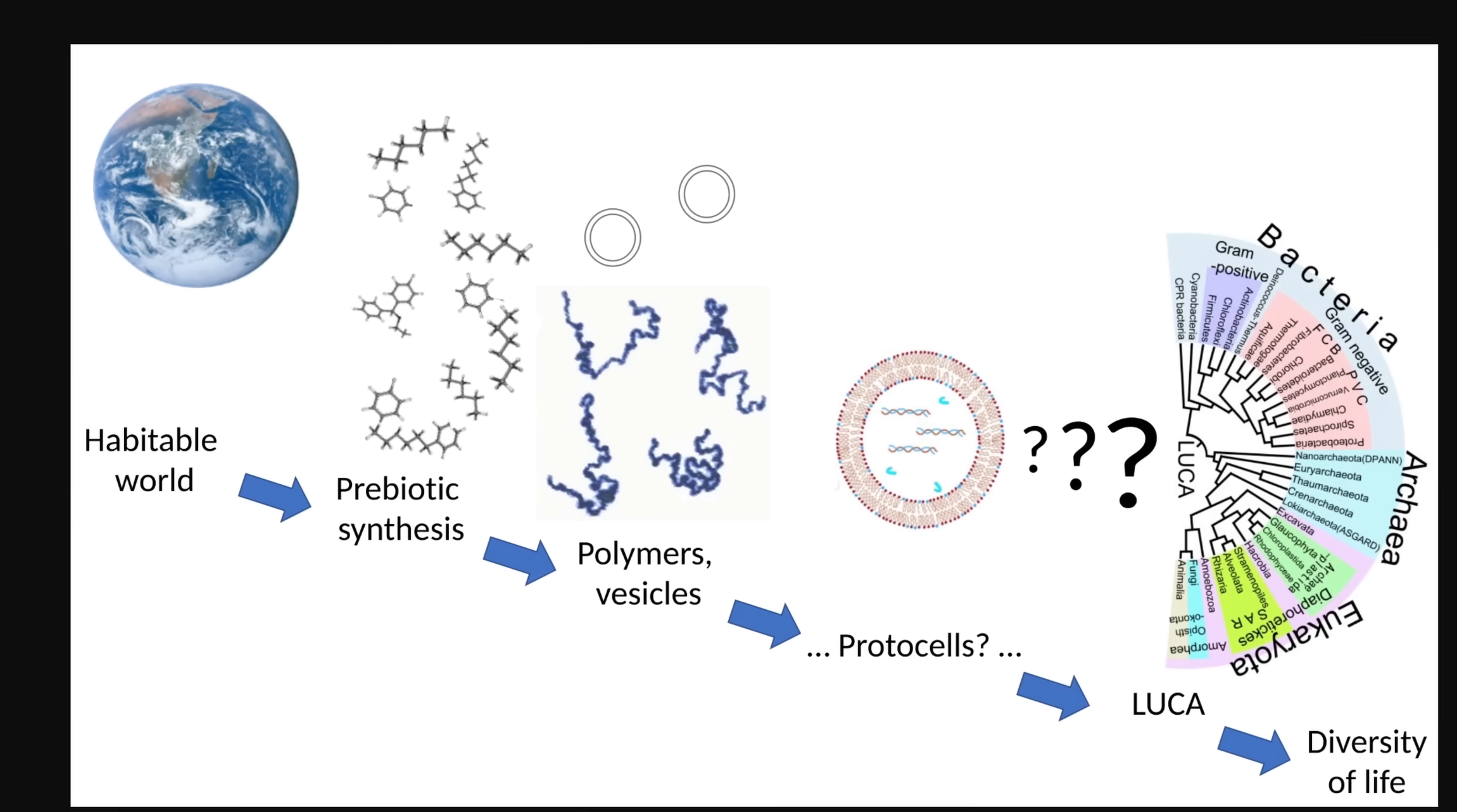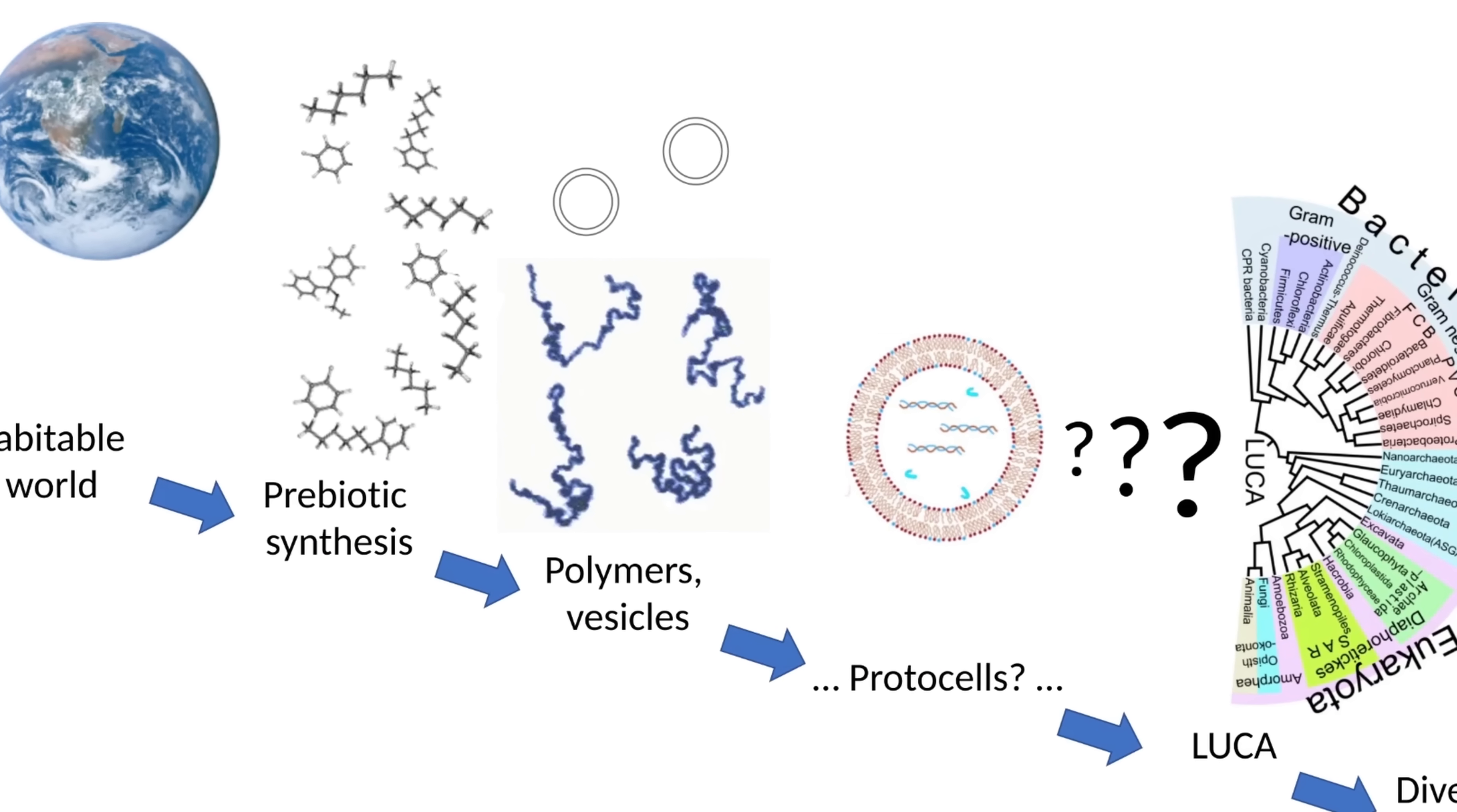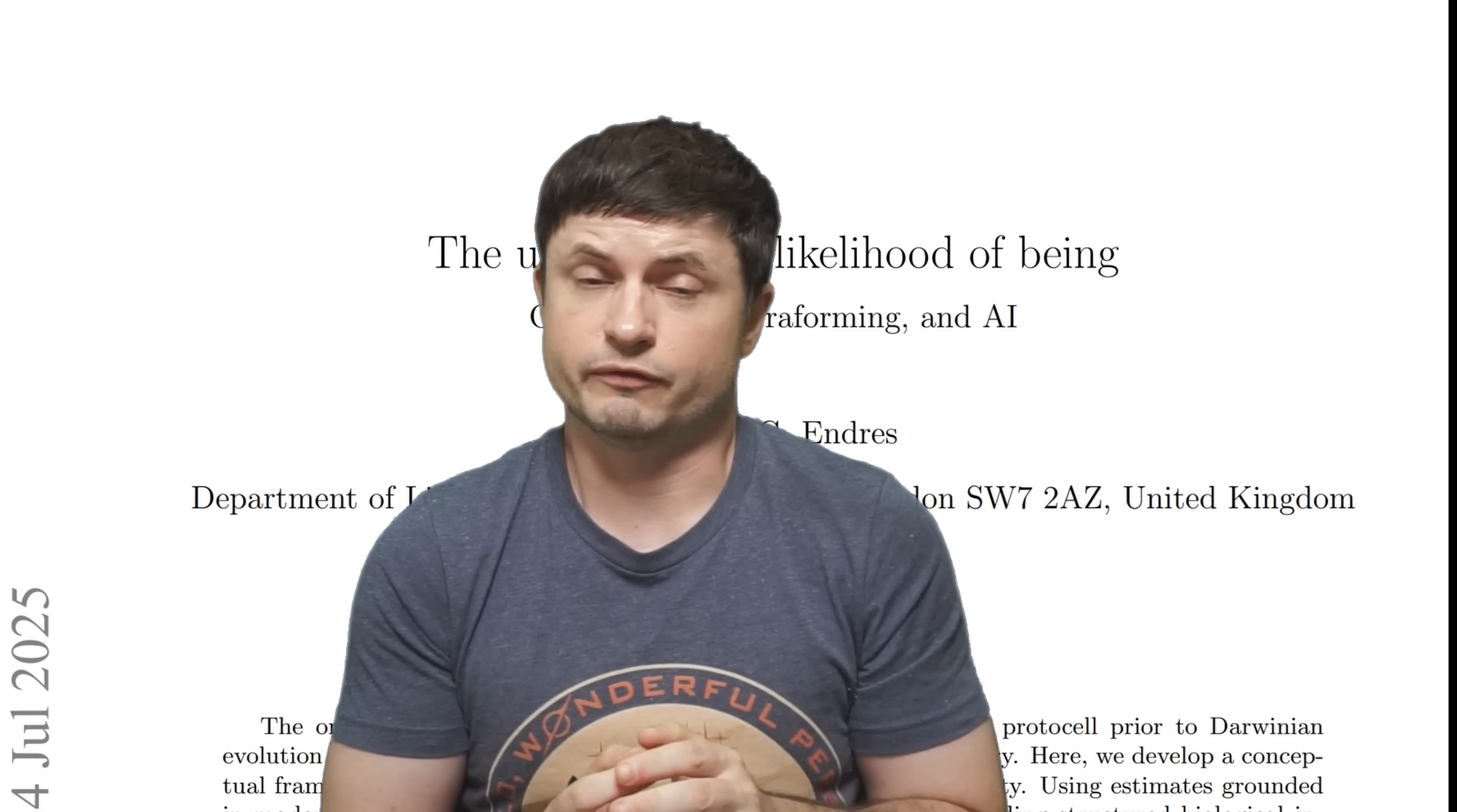But the thing is, this is pretty much where the study ends, because when it comes to the origins of life there is still this one major mystery. Even though we have a lot of this prebiotic synthesis and a lot of these initial polymers and vesicles and even potentially signs of protocells, as you can see from this picture, there are still quite a lot of question marks about what happened next. How exactly did the first complex cells form and how exactly did all of this then start to evolve into more and more complex life?